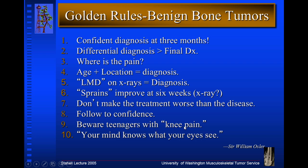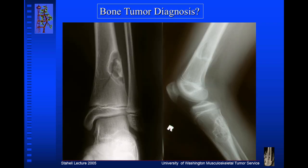Beware of teenagers with pain, especially knee pain, because teenagers are the highest risk children for malignant bone tumors. There's an old saying from Osler in the surgical literature: your mind knows what your eyes see — and that's an important statement. The orthopedic surgeon has the background to make a diagnosis when other people would look at an x-ray and still wonder what the diagnosis is.